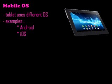Now we will see about mobile OS. OS means operating system. Without the operating system, we cannot open any device. Mobile devices use various operating systems — examples are Android and iOS. These two operating systems are used for mobile devices.